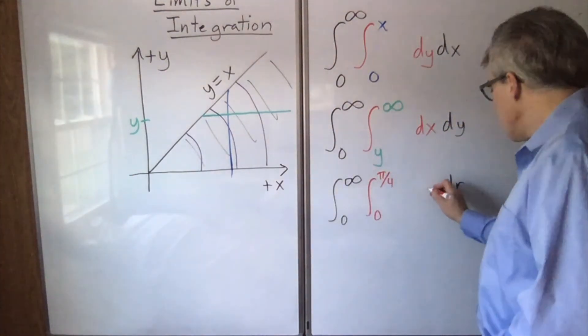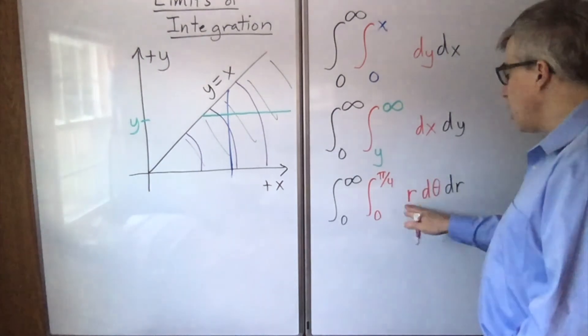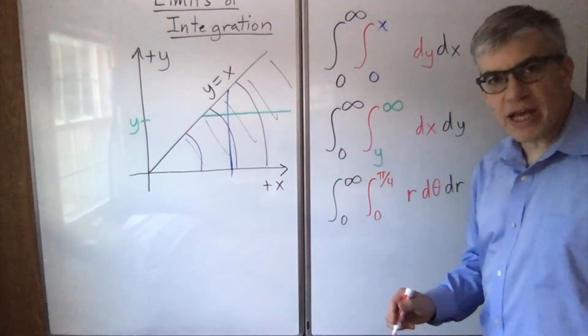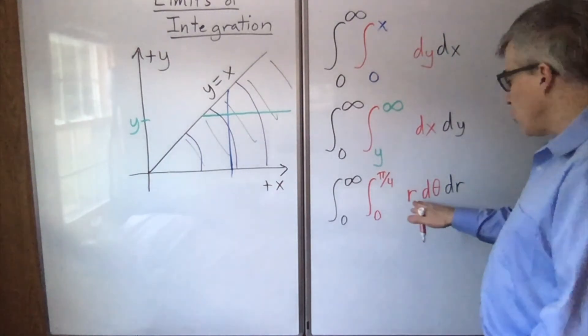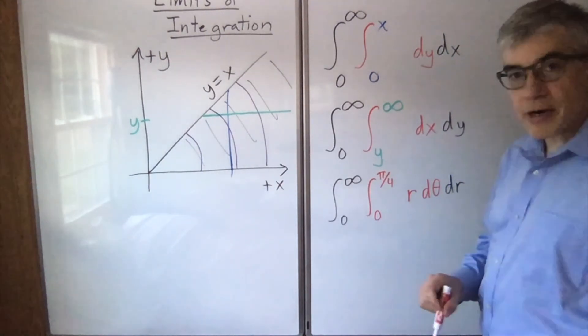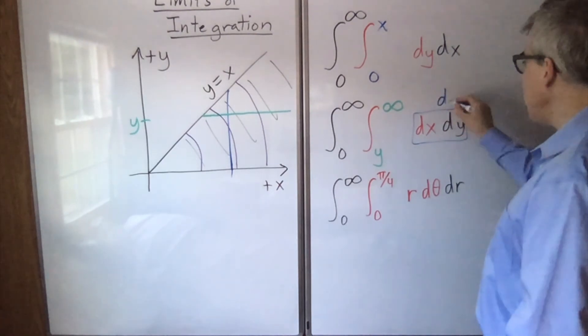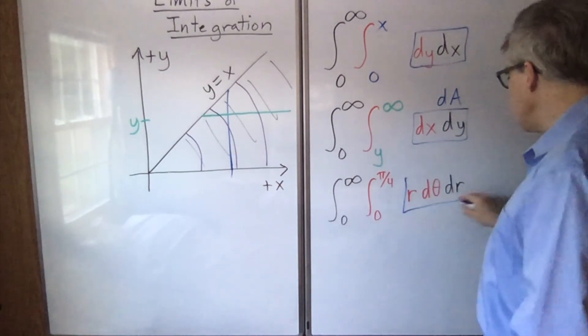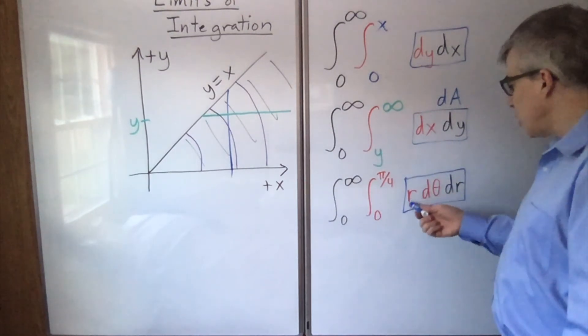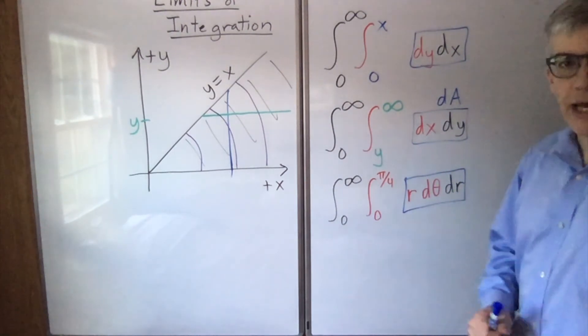Important tip though, we need an r here. r d theta is a little bit of length. d theta is just a little bit of an angle. So when you switch to polar form, don't forget to put the r there. This is d area, as is this, as is this. In polar form, r d theta dr is dA.